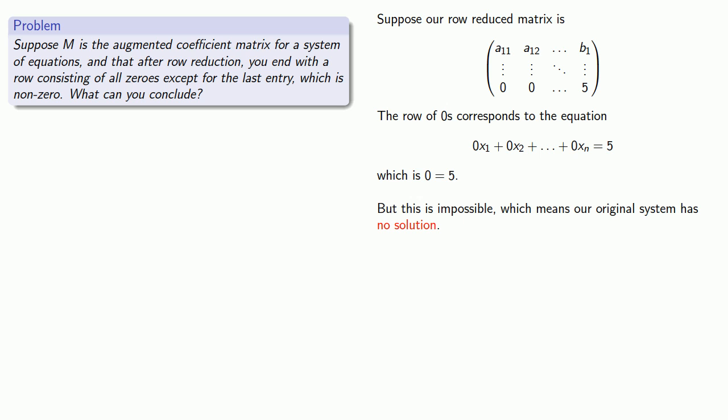It's important that while we can start by looking at an example, we don't want to end there. If this constant is any other non-zero number, we still get the same result: an impossibility and no solution to our original system of equations.